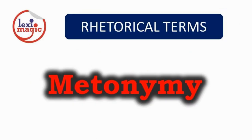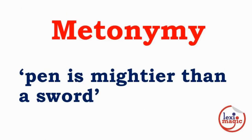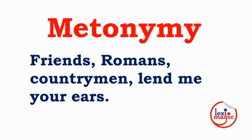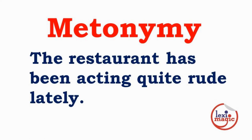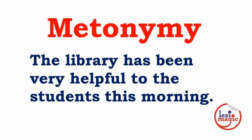Metonymy is a figure of speech where the name of a thing is replaced with the name of its attribute. In the saying 'the pen is mightier than the sword,' pen is a metonymy for diplomacy and written words, and sword is a metonymy for military might. From Shakespeare's Julius Caesar Act 1: 'Friends, Romans, countrymen, lend me your ears.' Other examples: 'The restaurant has been acting quite rude lately' and 'The library has been very helpful to the students this morning.'